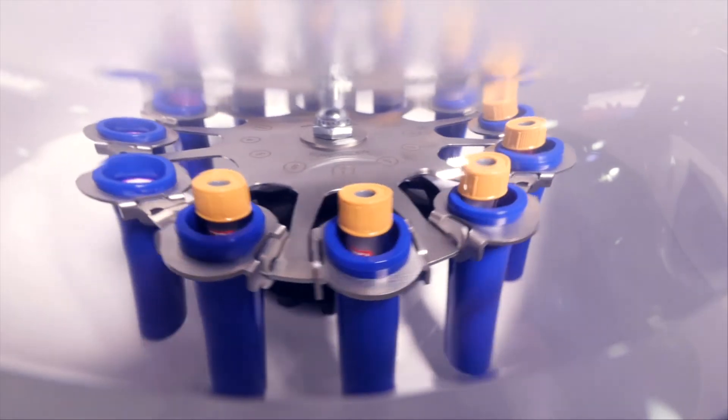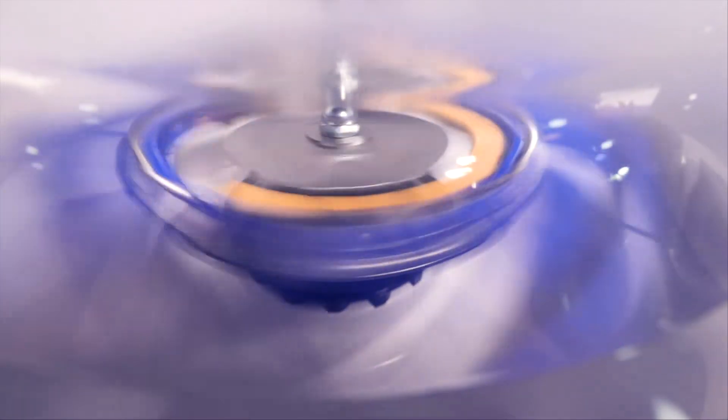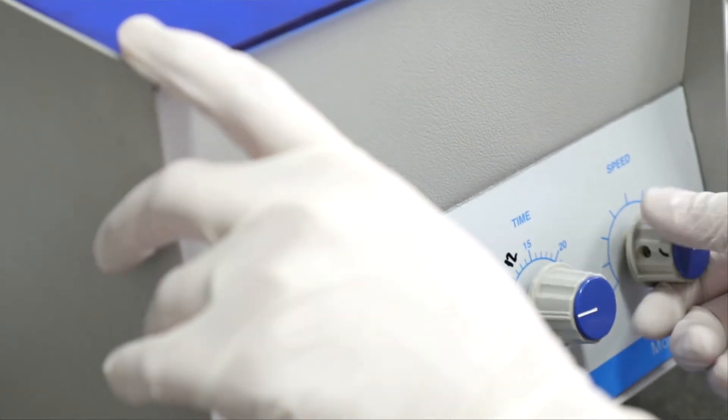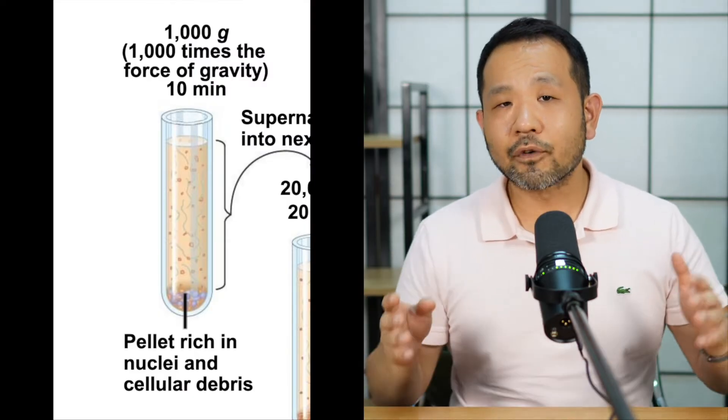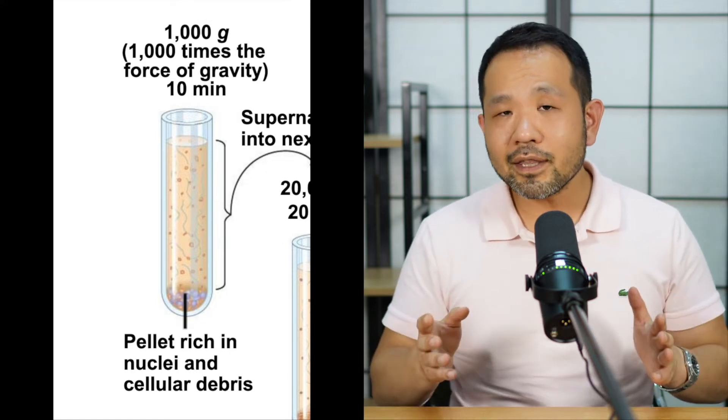The centrifuge spins those Eppendorf tubes and pushes the contents down to the bottom of the tube. We can set the amount of spin and the time we want to run the machine. The very first step in differential centrifugation is running the machine at about 1,000 g — that's 1,000 times the force of gravity — for about 10 minutes. When you do this, only the very large substances are pushed to the bottom, so things like nuclei and large cell debris form the pellet. If you're a scientist who wants to isolate the nucleus — perhaps to extract DNA — then that pellet is exactly what you're looking for, and the liquid supernatant can be discarded.